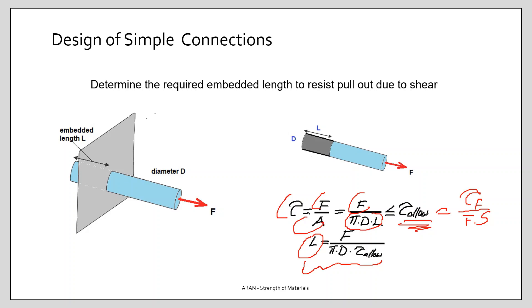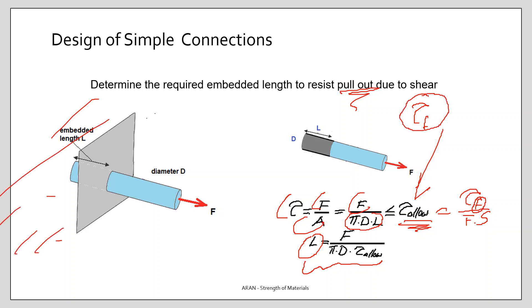Note that the fail shear stress here is not the shear strength of the rod material itself, but the fail shear stress of the connection between the rod and the concrete wall. If this shear stress is exceeded the connection is lost and pull-out occurs. This can be improved by applying glue or by making mechanical grooves to increase resistance.